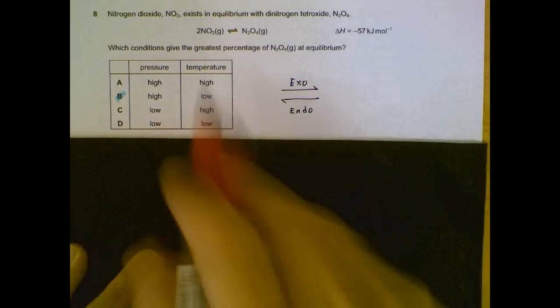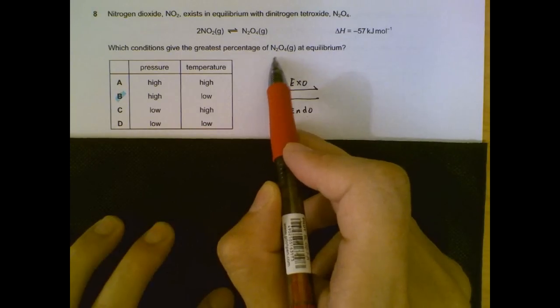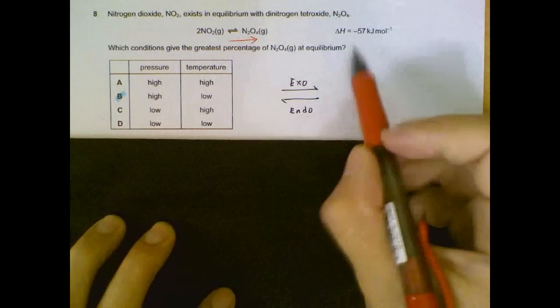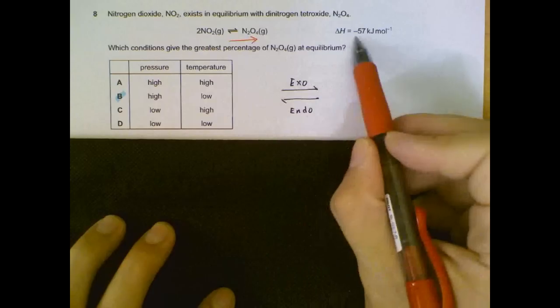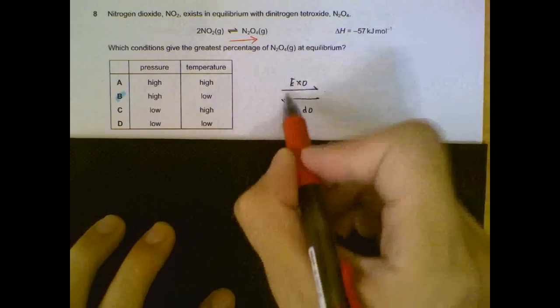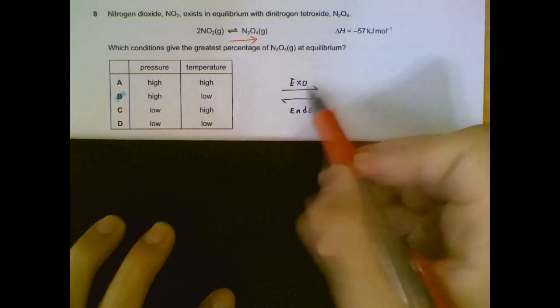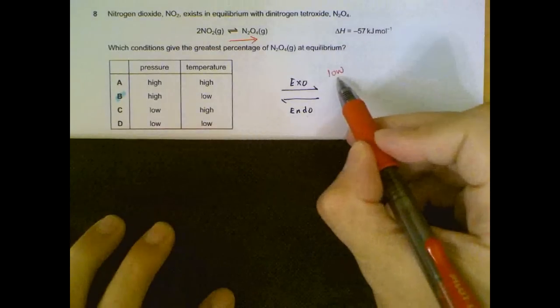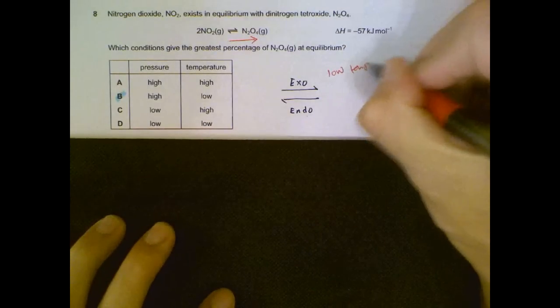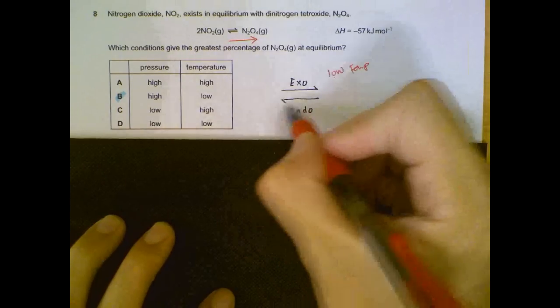Number 8, how can we get the greatest percentage of N2O4? The question is actually asking how can we shift the equilibrium to the right. So first of all, we figure out that the forward reaction is exothermic, because enthalpy change forward reaction is negative value. Then a backwards reaction is endothermic. So if we want to shift it to the right side, if we want to favour the exothermic reaction, we have to have a low temperature. Because a low temperature, the system will react to produce heat to counteract the low temperature. So a low temperature will favour the exothermic reaction.